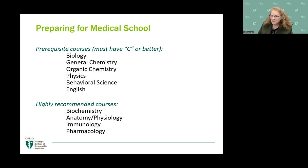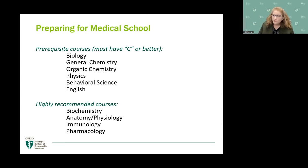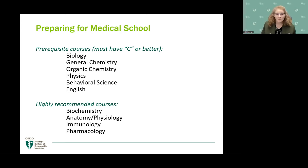Prerequisite courses are largely the same as for MD programs. The main difference is we don't have a math requirement. You need a C or better in eight hours each of biology, general chemistry, organic chemistry, and physics; six hours of behavioral science (psychology, sociology, anthropology); and six hours of English. AP credit counts. Always do more than just the basic prerequisites — keep taking upper-level courses.